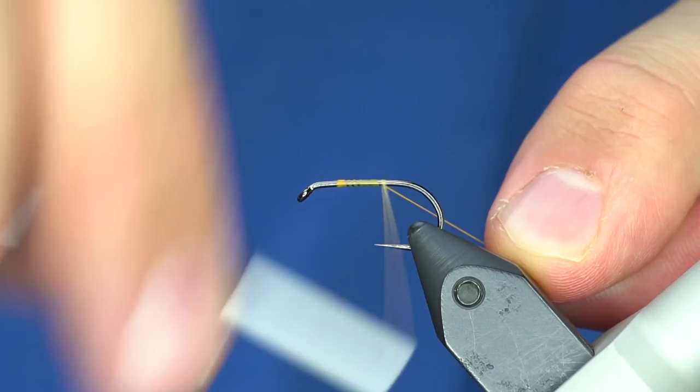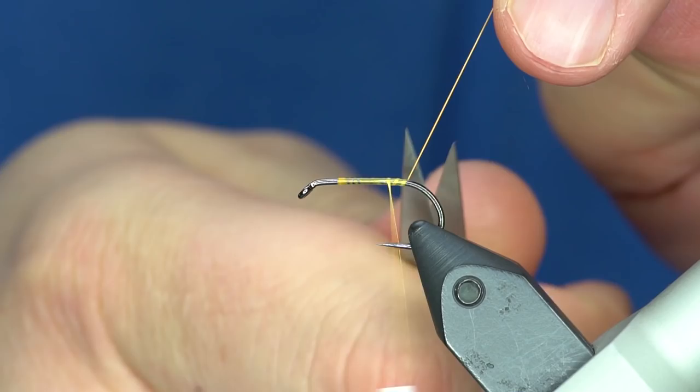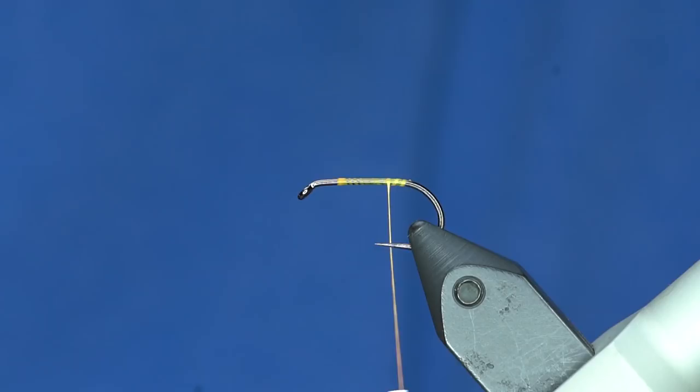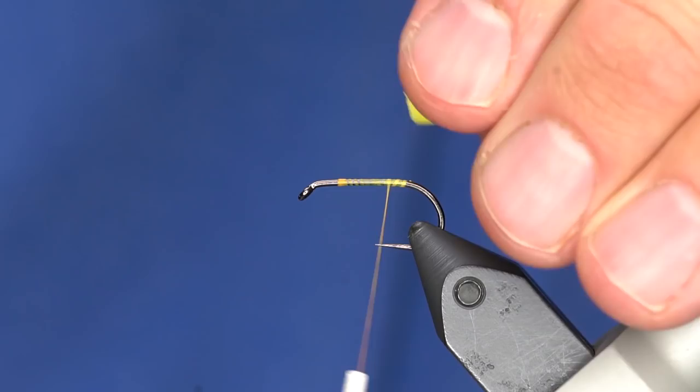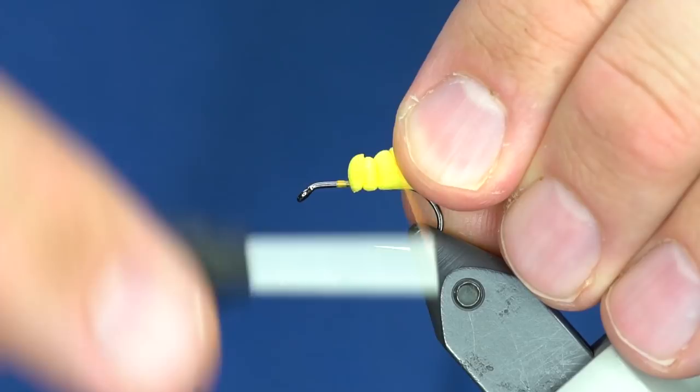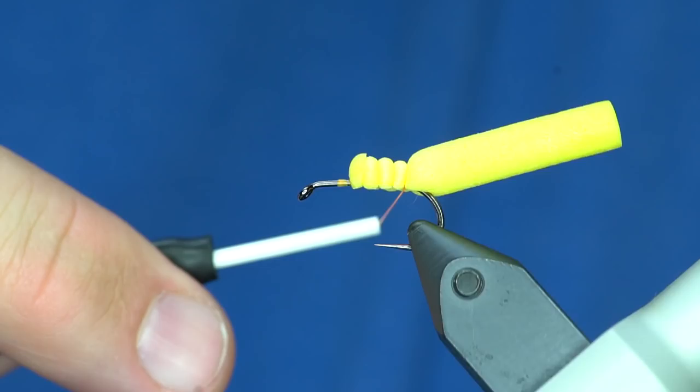I'm just gonna take some fluorescent orange thread and dress the hook. Some guys will split this foam down the middle, but I was talking to Lance and Lance gave me permission and authority just to tie it on the back. So you're just gonna go about halfway up the hook shank. This is only 70 denier thread because I like how it ties down at the end of the fly, doesn't have as much bulk.